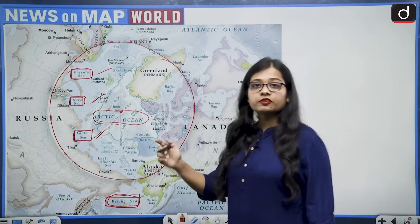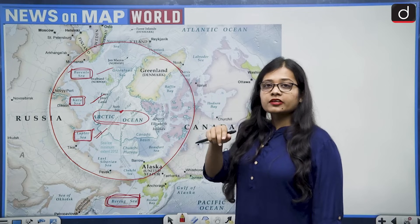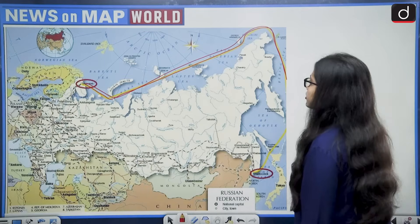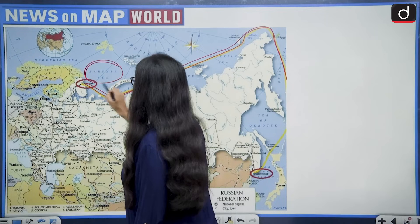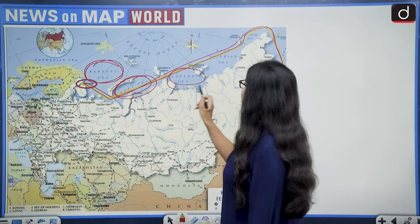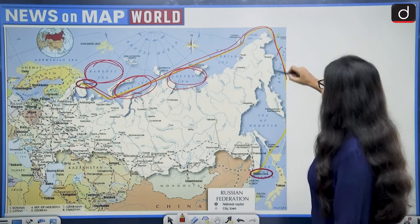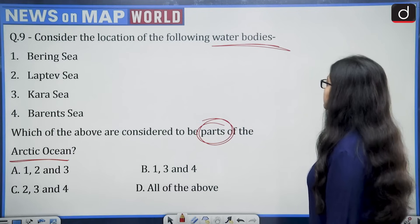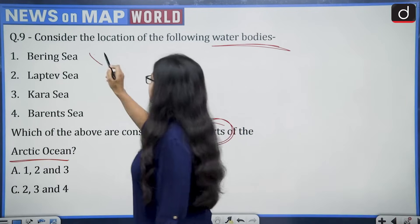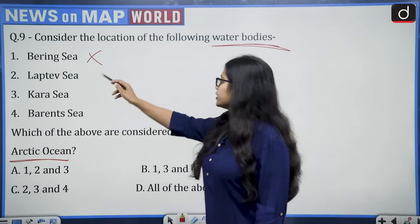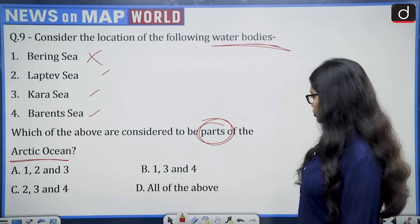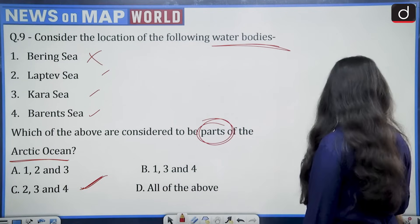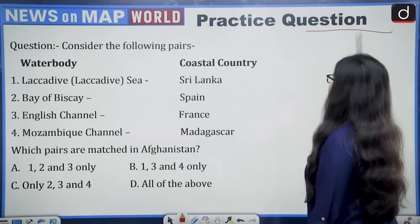The water body not lying in the Arctic Circle is the Bering Sea, which differentiates Russia from the Alaska region of the US via the Bering Strait. So the Bering Sea does not come under the Arctic Ocean. The remaining three — Laptev Sea, Kara Sea, and Barents Sea — are in the Arctic Ocean. The correct answer is option C: two, three, and four.